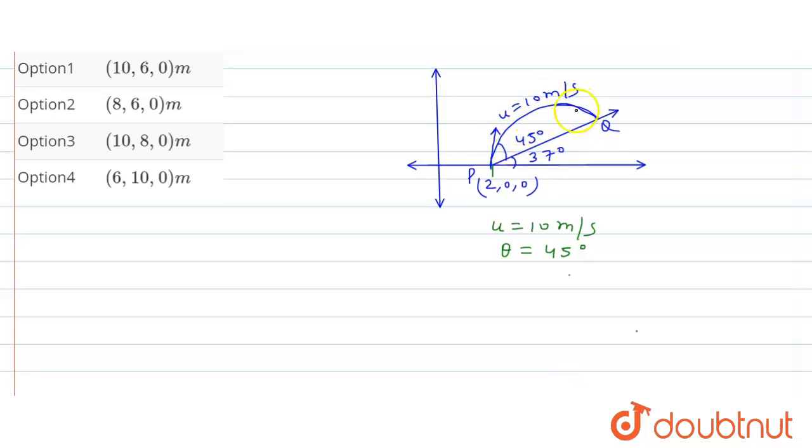Range equals u² sin(2θ) / g. From here, u² equals 100 (10 squared is 100), times sin(2θ), which is sin(90°), divided by g equals 10. So this equals 10 meters.